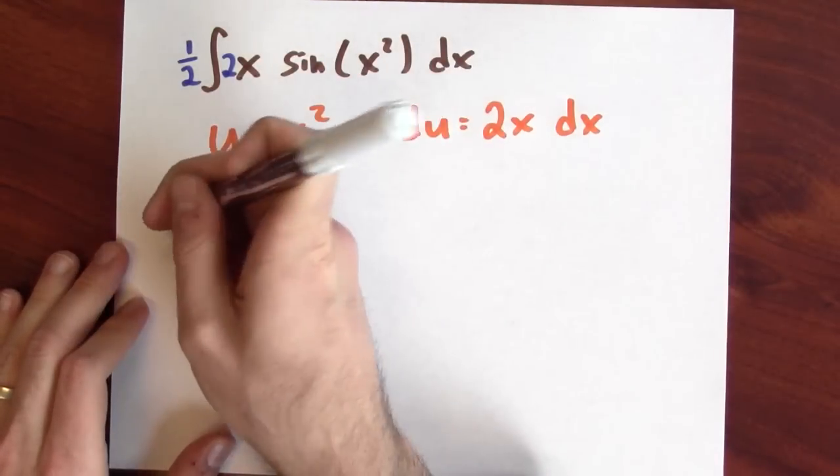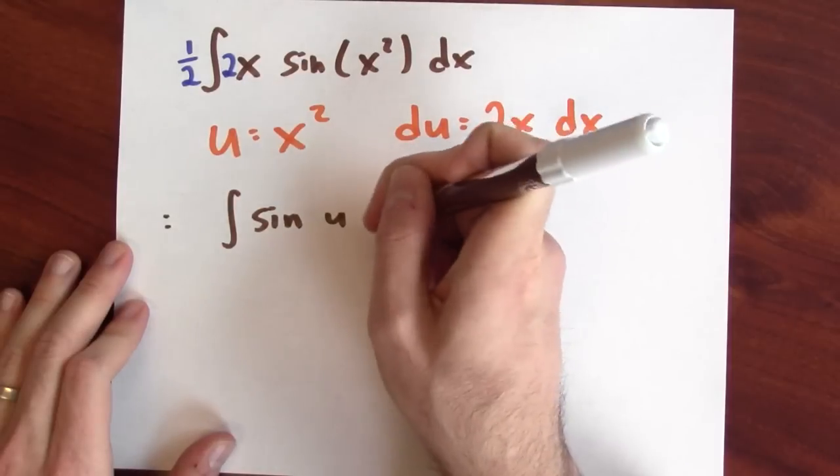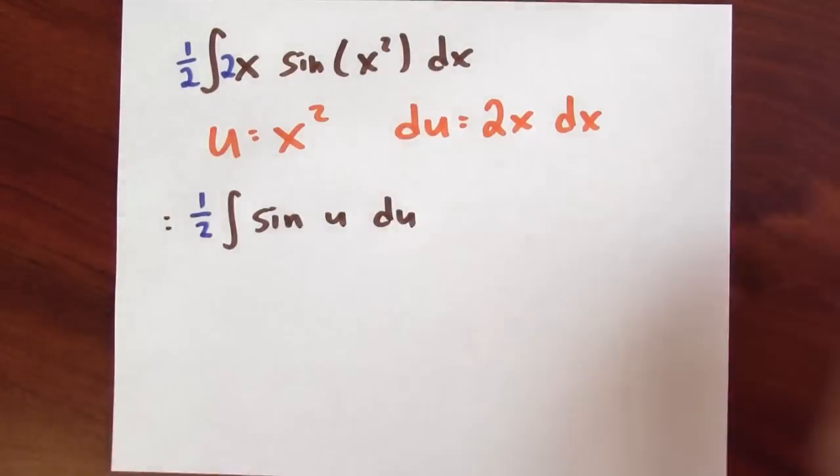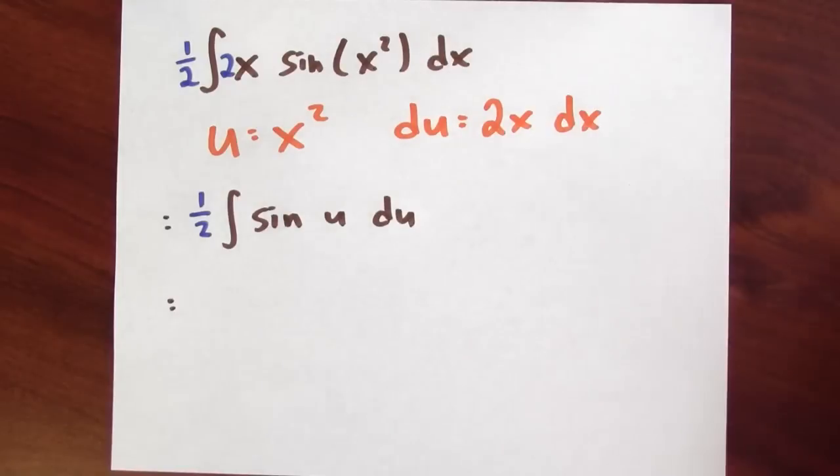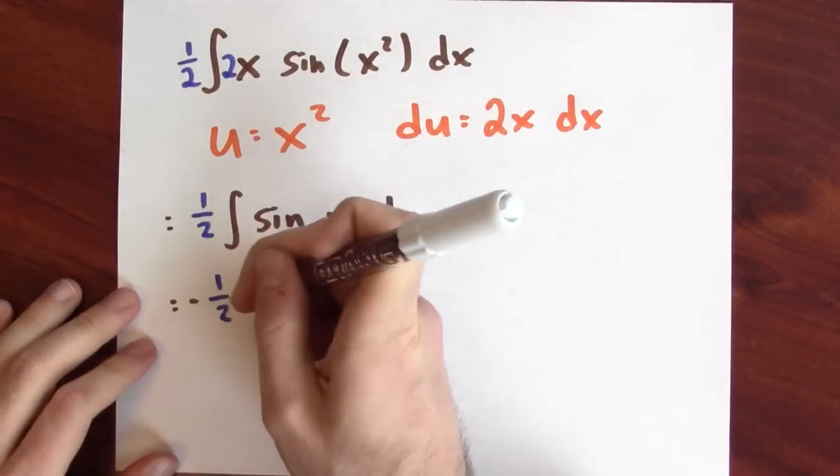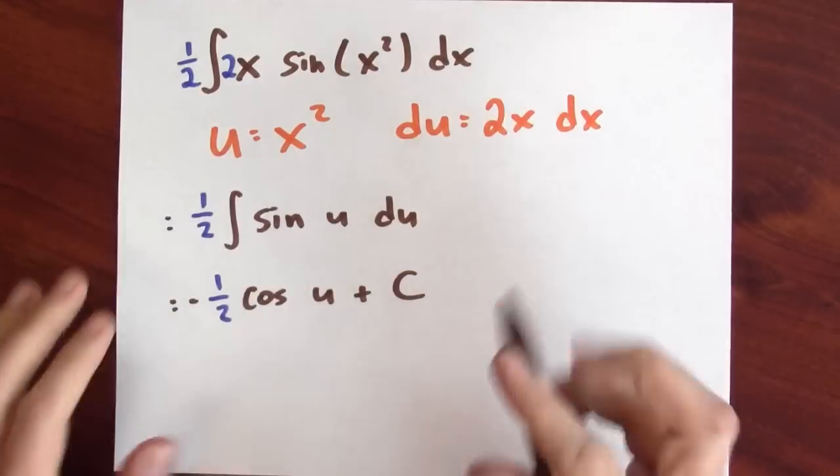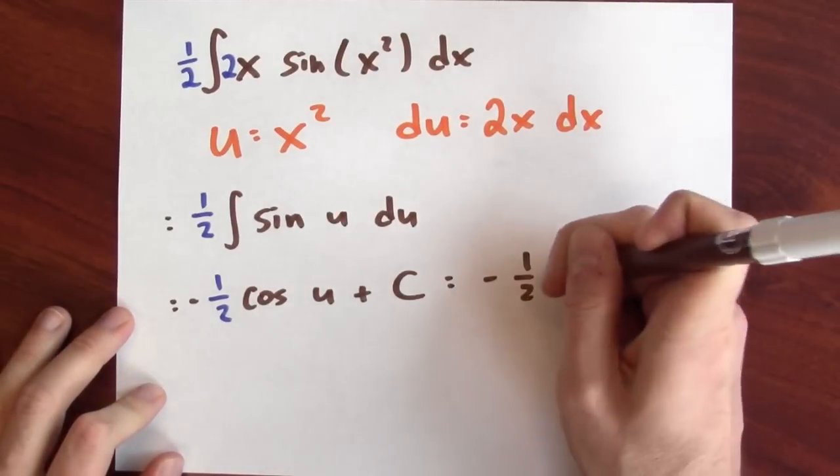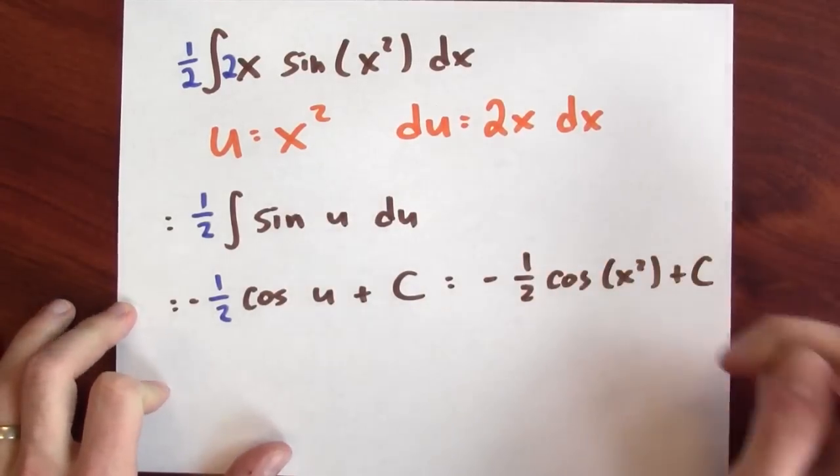So this anti-differentiation problem is the same as sine u du, and I've got to make sure to include that 1 half on the outside. But now I know an anti-derivative for sine of u - it's negative cosine. So I've got 1 half, and then an anti-derivative of sine of u is negative cosine plus c. But I don't want my anti-derivative to be in terms of u, so I'll rewrite this as negative 1 half cosine of u, which is x squared, plus c.